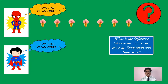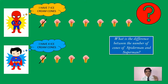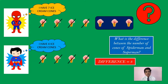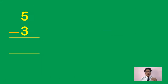Superman has four ice cream cones. They will cancel out the common things — the common ones cancel. So Spider-Man has three more ice cream cones than Superman. So we say that the difference of the number of cones is 3.